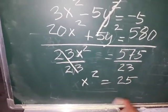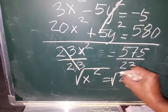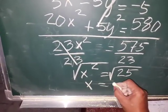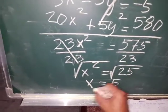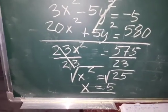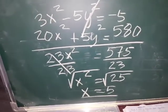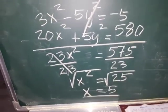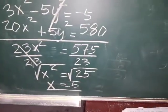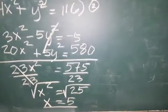So 23x squared equals 575, divided by 23 equals 25. That's a perfect square. Take the square root of both sides. Square root of x squared is x, and square root of 25 is 5. So our x is 5. I already explained how that works earlier. If you want more examples for that, I will make another video — just comment below.